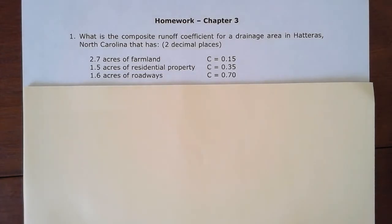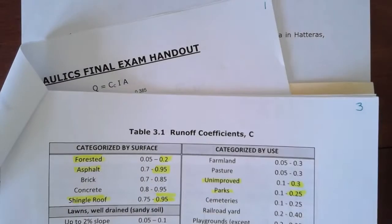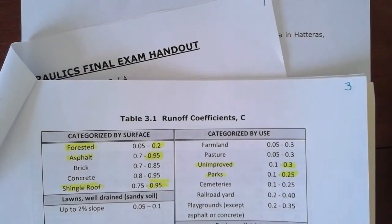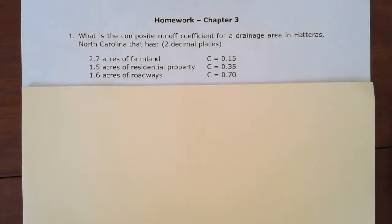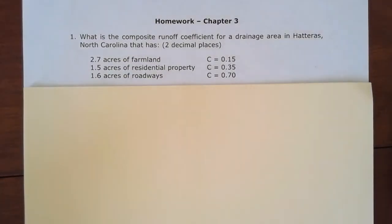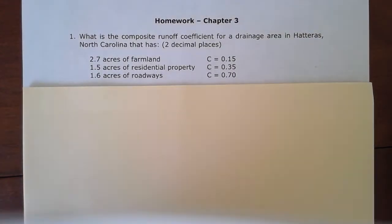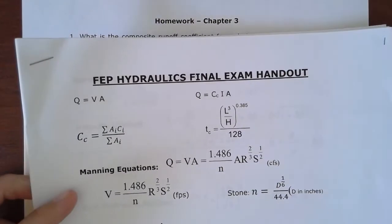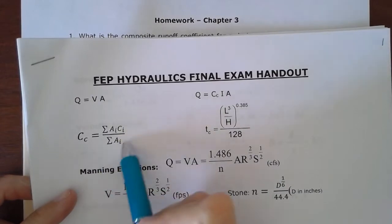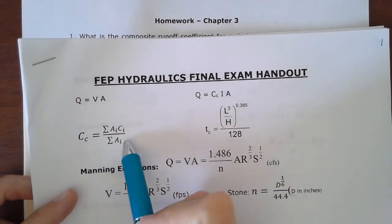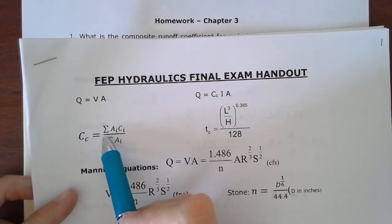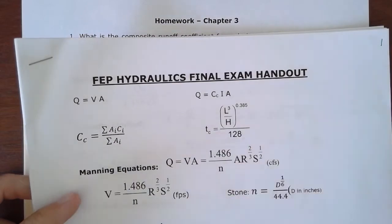If you weren't told those coefficients, you would go to Table 3-1 and look up your runoff coefficients. But since you're given this information, you're just going to use the coefficients provided and apply that formula from the cover page: individual area times individual coefficient, sum that up, then divide by the sum of the areas.